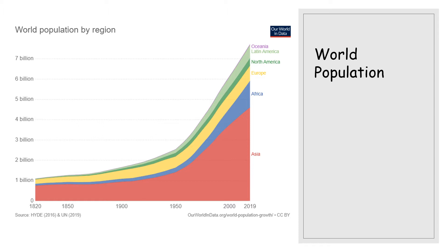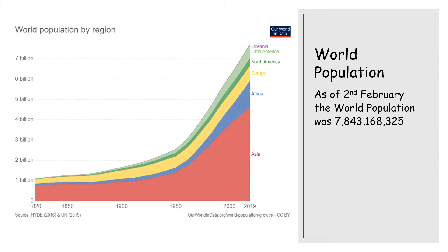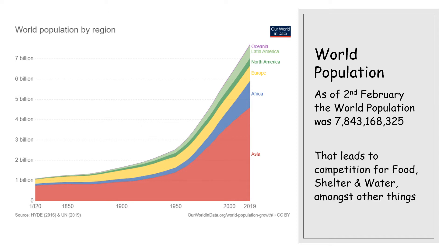This is where we see it most commonly used in society because we're talking about the human species. As you can see from this graph provided by Our World in Data, the population of humans has gone from around 1 billion in 1820 to over 7 billion in just 200 years. At the time of recording the population is 7.8 billion, gone up by about 150,000 just in the last day, and it's still rising on a second-by-second basis. That leads to competition for food, shelter, and water.